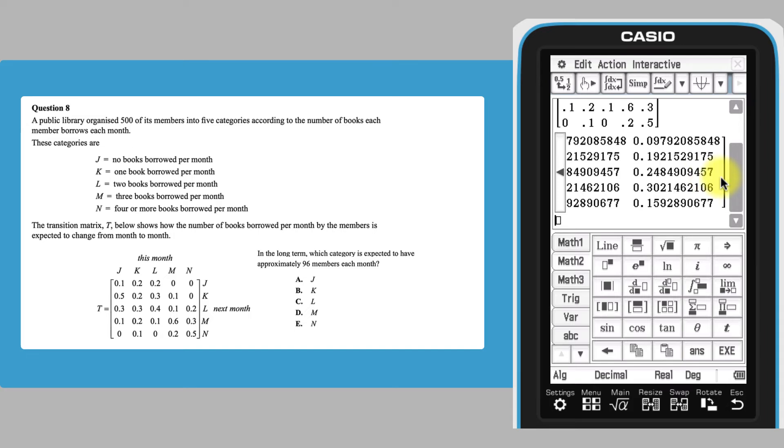In this question, we need to know something about the number out of 500 members that will end up in this state. To calculate this, it is helpful to realize that the steady state values are independent of initial state, so multiplying our steady state by any 5 by 1 column matrix with elements that sum to 500 will provide us with the answer required.